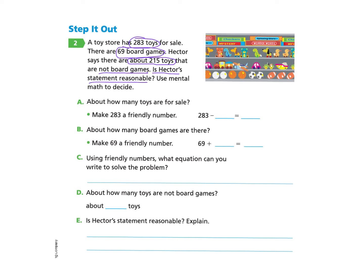Part A asks: about how many toys are for sale? Make 283 a friendly number. If you'd like to pause and try it yourself, you're welcome to do that. I show that 283 would be easier to compute if I took away the ones digit, which is 3. So 283 minus 3 leaves me with 280.